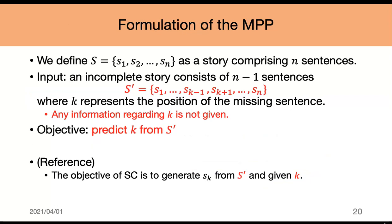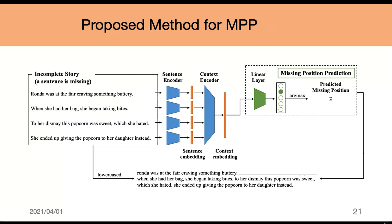This is the formulation of MPP. We define S = (s1, s2, ..., sn) as a story comprised of n sentences. The input is an incomplete story S' consisting of n-1 sentences. The variable k represents the position of the missing sentence, and any information regarding k is not given. The objective of our task is to predict k from S'. For reference, the objective of story completion is to generate sk from S' given k. This figure shows our proposed method for missing portion prediction.